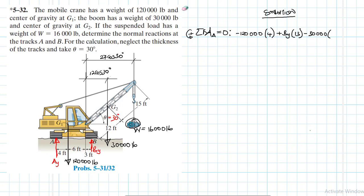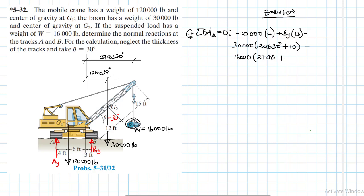So the moment equation is: plus By times 13, minus 120,000 times 4, minus 30,000 times (12 cos 30 plus 10), minus 16,000 times (27 cos 30 plus 10), all equal to zero. The only unknown is By, so we solve for it.